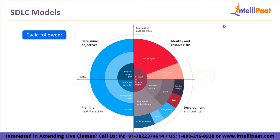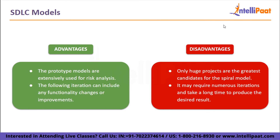For advantages, prototype models are extensively used for risk analysis, and any functionality changes or improvements can be included in the following iteration. For disadvantages, only huge projects are the greatest candidates for the spiral model, and as it may require numerous iterations and take a long time, the cost may be substantial.